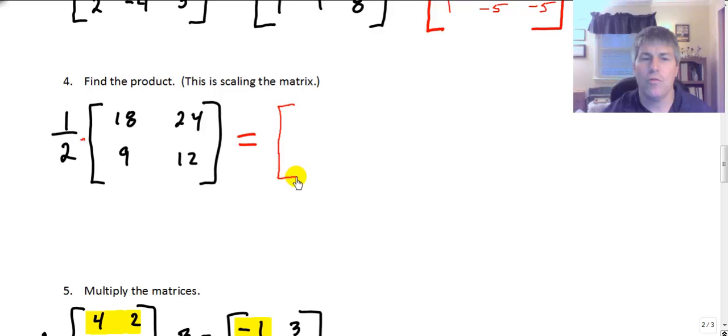So my new matrix, well, it's going to be the same size because all I'm going to do is make each one of these elements half its size. So 1 half of 18 in spot 1, 1 is 9. 1 half of 24 in cell 1, 2 or location 1, 2, that element is 12. Half of 9, 9 halves. And half of 12 is 6. So that's our new scaled down 2 by 2 matrix.